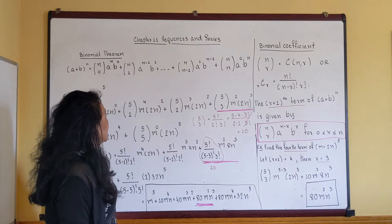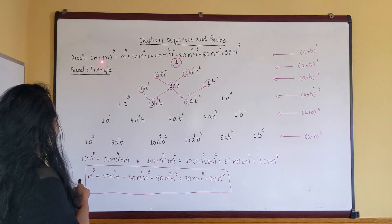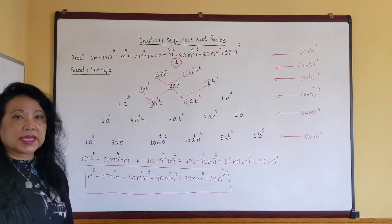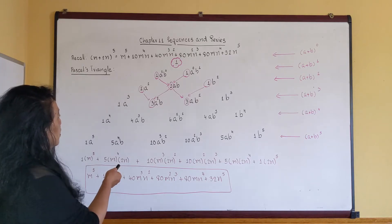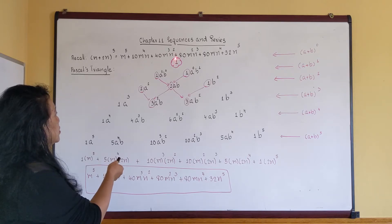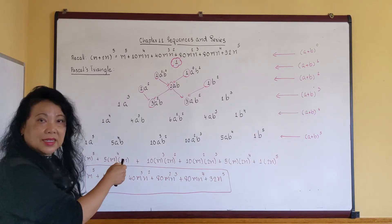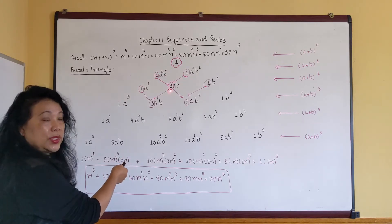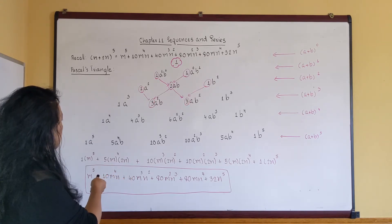Now let's look at Pascal's Triangle using the same example, (m + 2n) to the fifth, and show that we get the same answer. Pascal's Triangle always starts with the number one at the top. The outside is always one. Then one plus one gives two, the outside is always one, one plus two is three, two plus one is three, and continuing: one plus three is four, three plus three is six, three plus one is four, with one on the outside.